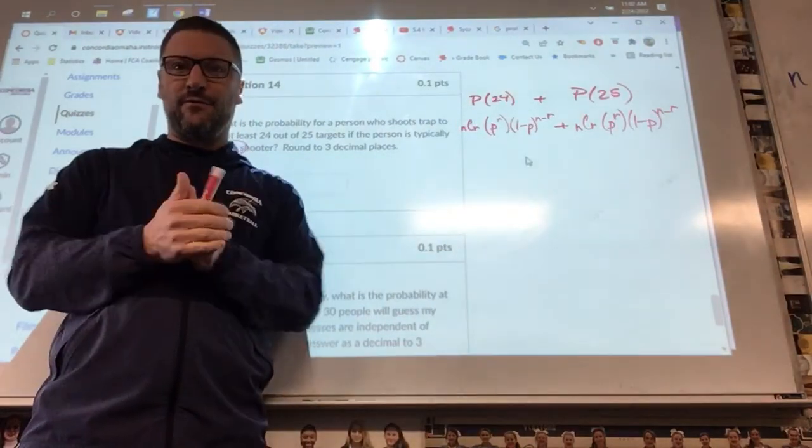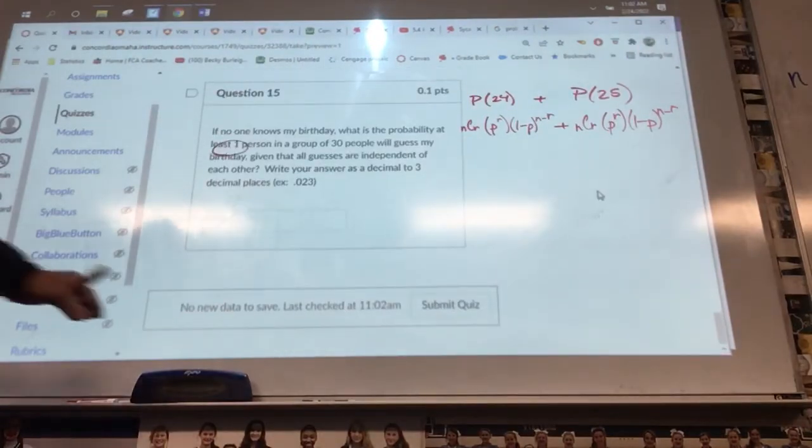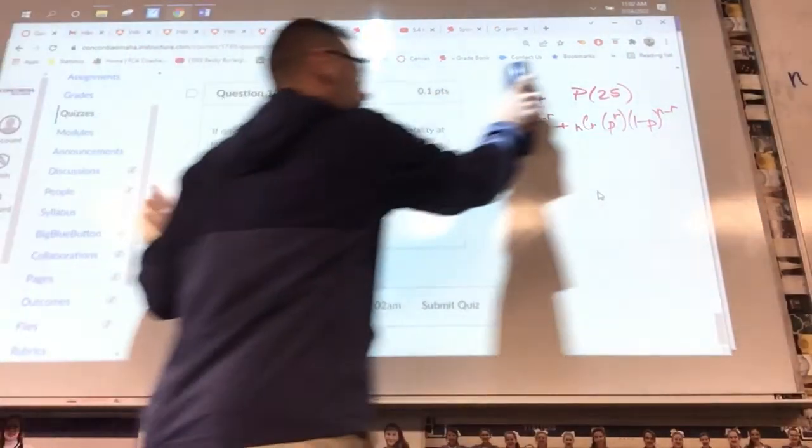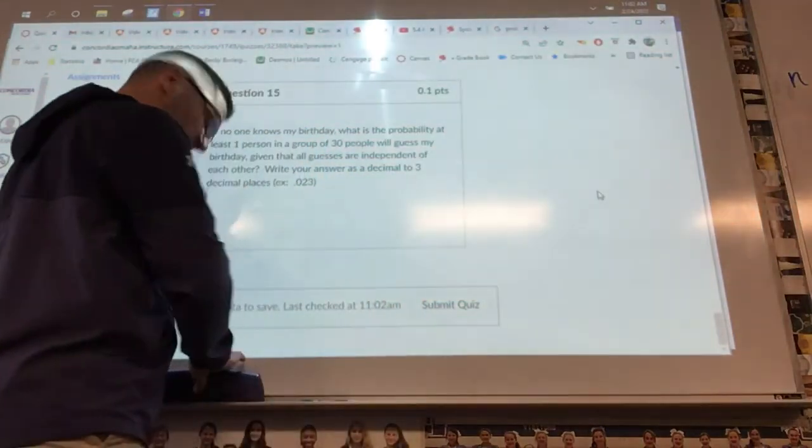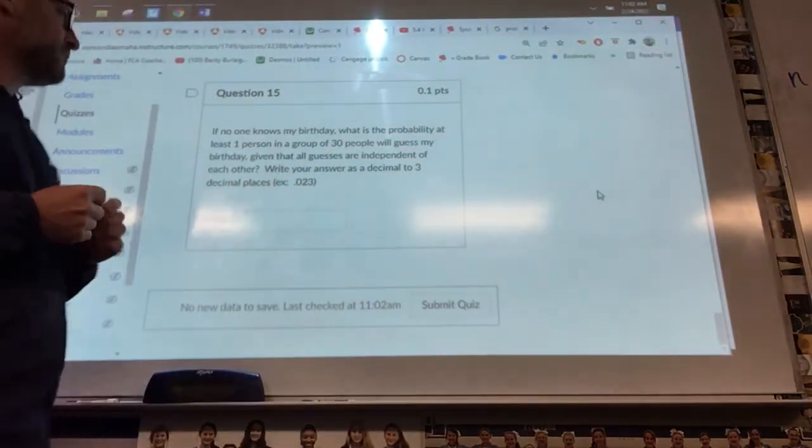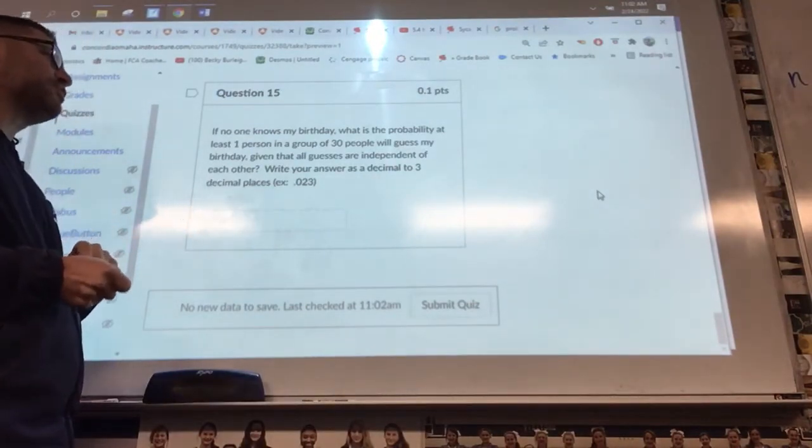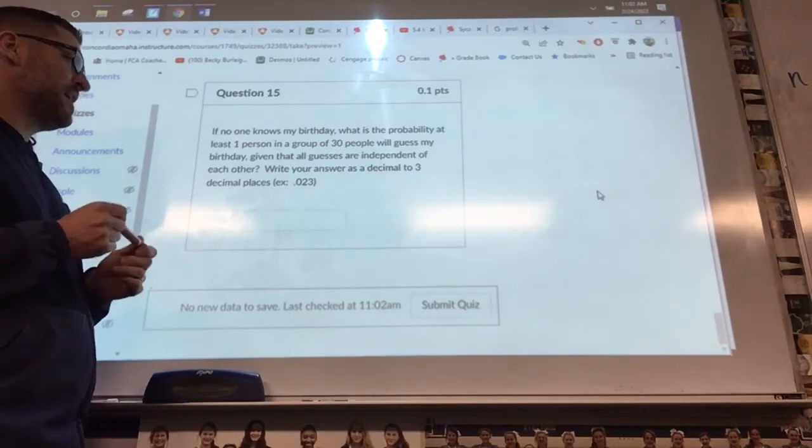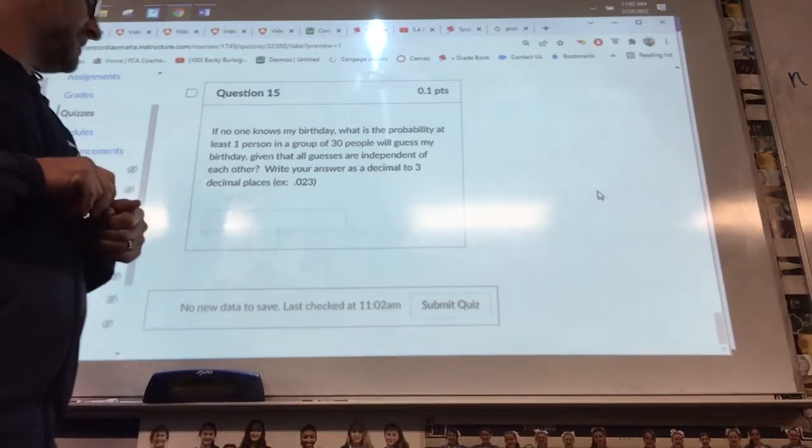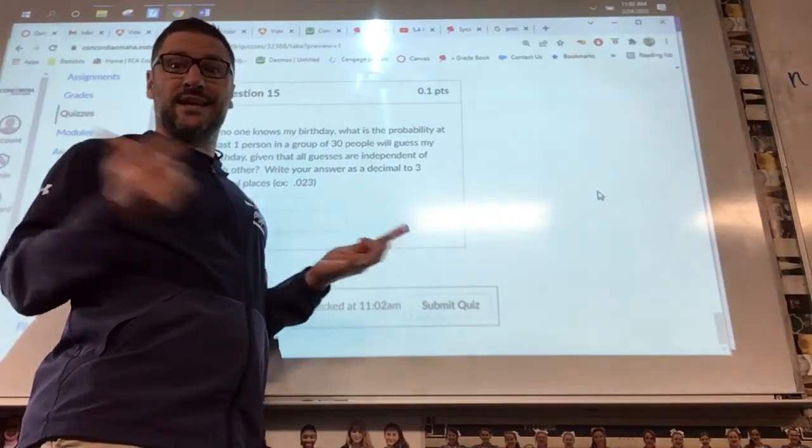And then the last one: if no one knows my birthday, let's say zero of you knew my birthday and you were just going to guess. If no one knows my birthday, what's the probability at least one person in a group of 30 will guess my birthday, given that all guesses are independent of each other? What that means is two people could guess the same one because they don't know what anybody else guessed.